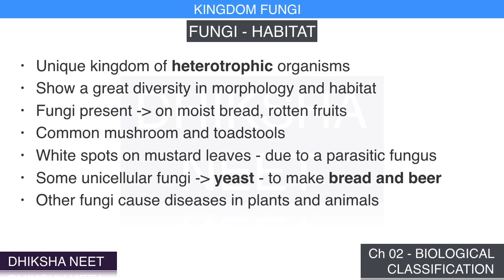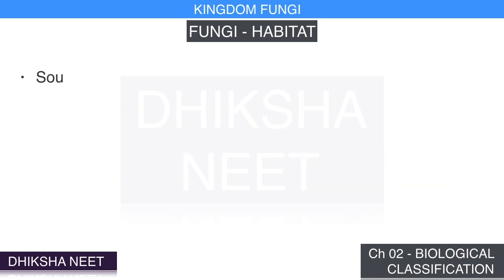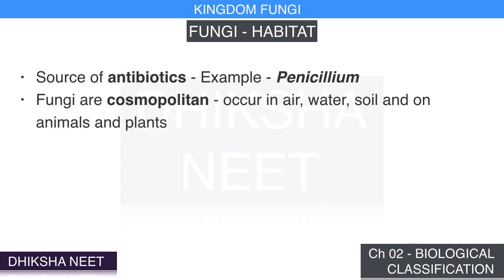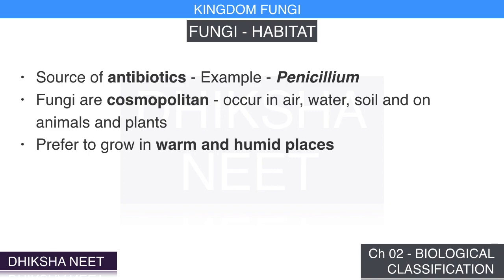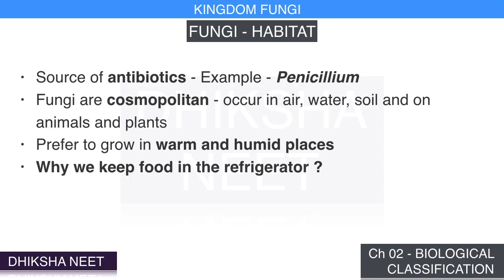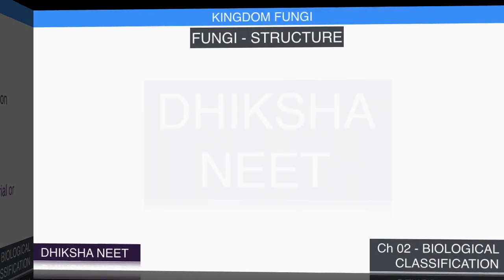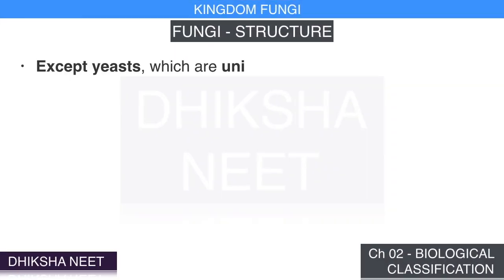Some unicellular fungi like yeast are used to make bread and beer. Other fungi cause diseases in plants and animals — wheat rust causing Puccinia is an important example. Some are the source of antibiotics, for example Penicillium. Fungi are cosmopolitan and occur in air, water, soil, and on animals and plants. They prefer to grow in warm and humid places — this is why we keep food in the refrigerator, to prevent fungal or bacterial infections.